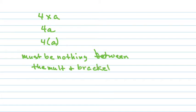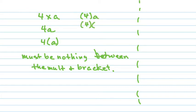There must be nothing between the multiplier and the bracket. I want you to practice identifying this — we're going to do a little exercise: is it multiplication or not? It doesn't really matter where they are, as long as there's nothing between the bracket and the number. All three of those bracket cases mean multiply.